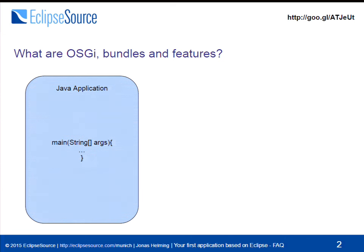The first question is: what do the terms OSGi, bundle, feature, and plugin mean? If you develop a plain Java application outside of Eclipse, you typically have a monolithic thing — you have a main method. You can have some modularity with JARs, but you don't have true modularity, because whatever you put on the class path, you can access. There is no concept of creating modules that can define an API and define dependencies between each other. That might change with Java 9, but that's the current situation.